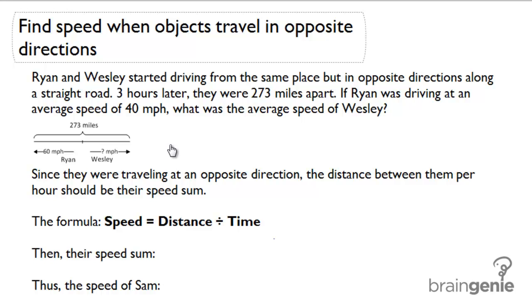Since they were traveling in opposite directions, the distance between them per hour should be their speed sum. The formula speed equals distance divided by time can be used to figure out their speed sum.